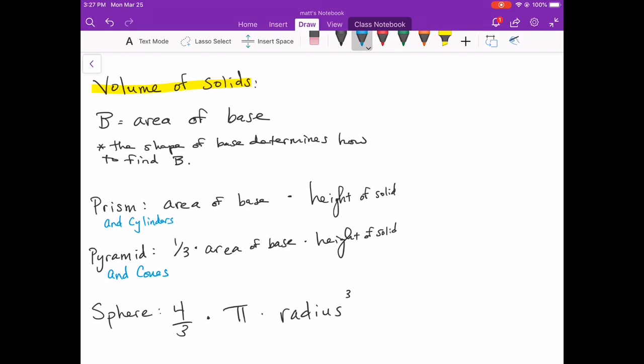Prism and cylinders, the volume formula would be the area of the base times the height of the solid. So the height of the solid is the shortest distance from the base to the opposite sides, opposite base or in a pyramid or a cone the point at the top of the solid. A pyramid and a cone, that's going to be one-third times the area of the base times the height of the solid. And then a sphere is going to be four-thirds times pi times the radius cubed.